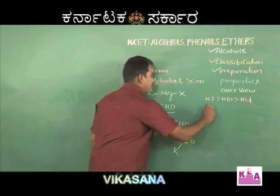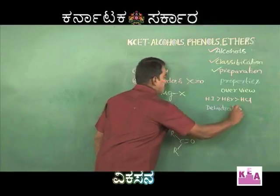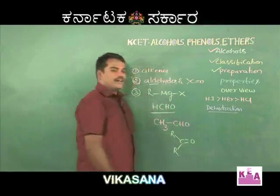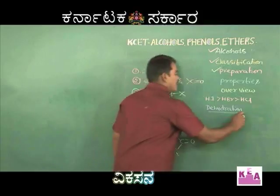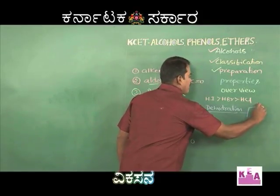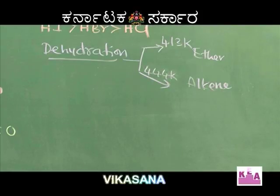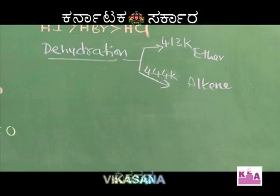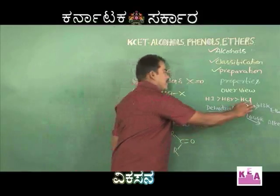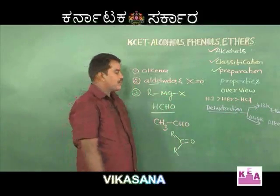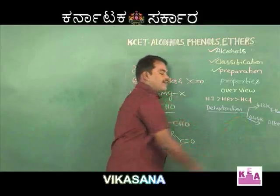The next property of alcohols is dehydration. Alcohols undergo dehydration in the presence of concentrated sulfuric acid. At different temperatures, dehydration occurs in different ways. If heated to 413 K, the product is an ether. If heated to 444 K, the product is an alkene.